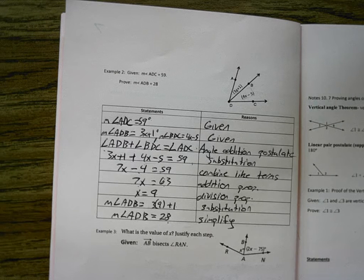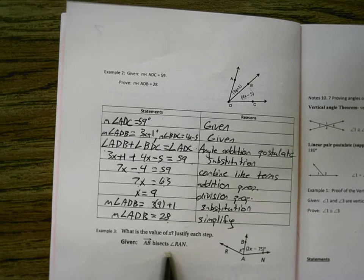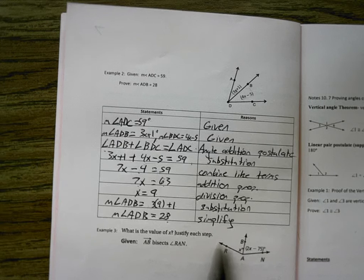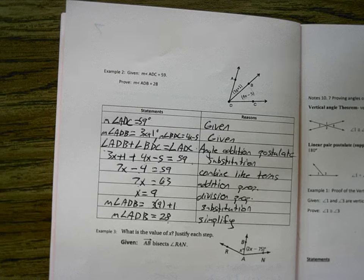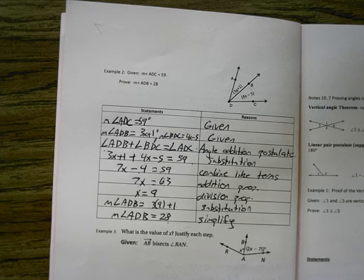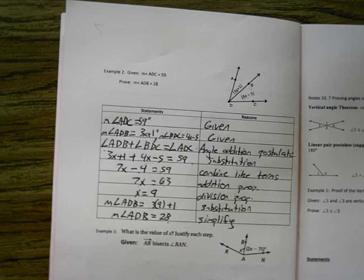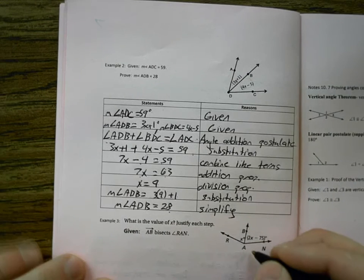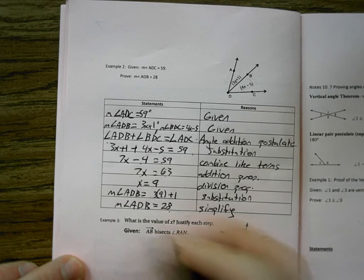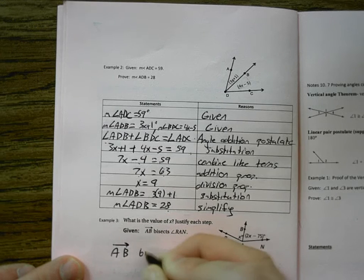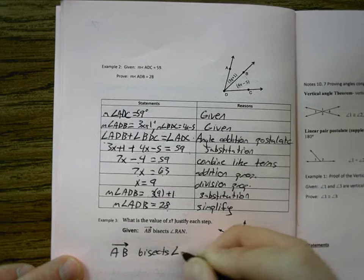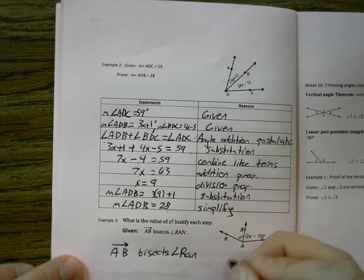Next one. What is the value of X? Justify each step. We are given AB bisects RAN. So here's AB bisects RAN. What does it mean to bisect something? Cut it in half. If I cut it in half, what did I make? Two equal halves. Perfect. So now we're on the right track. So let's start off with our given. Write that down. Ray AB bisects angle RAN. This was given.